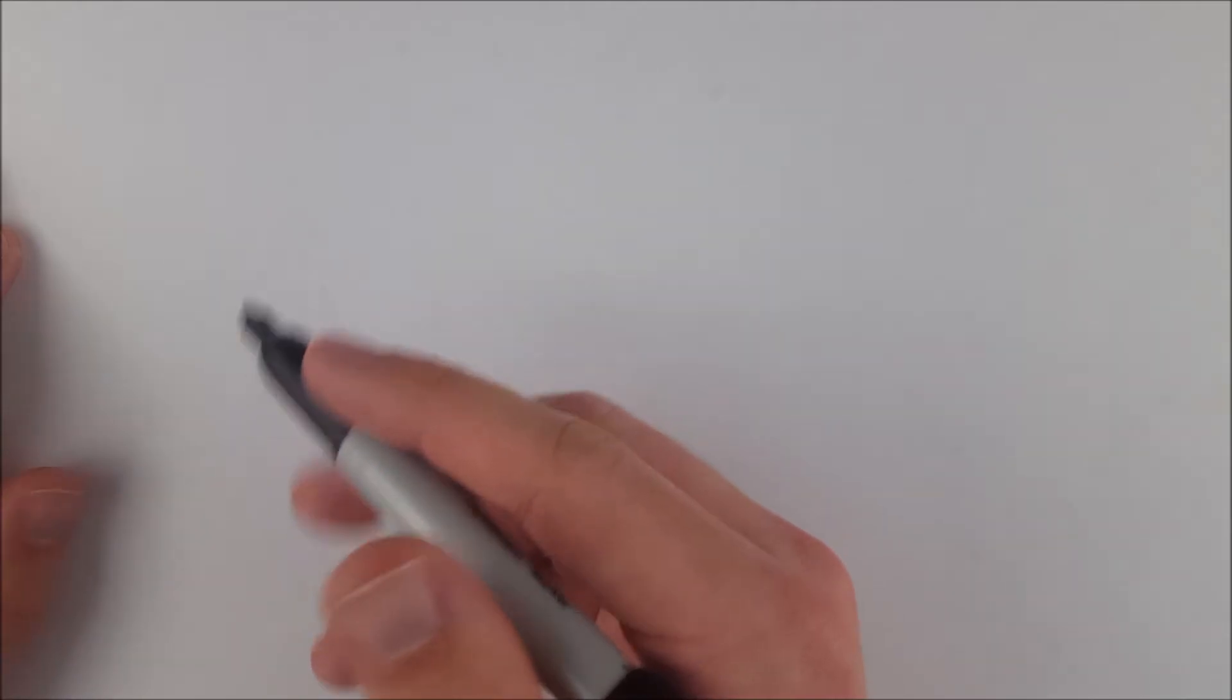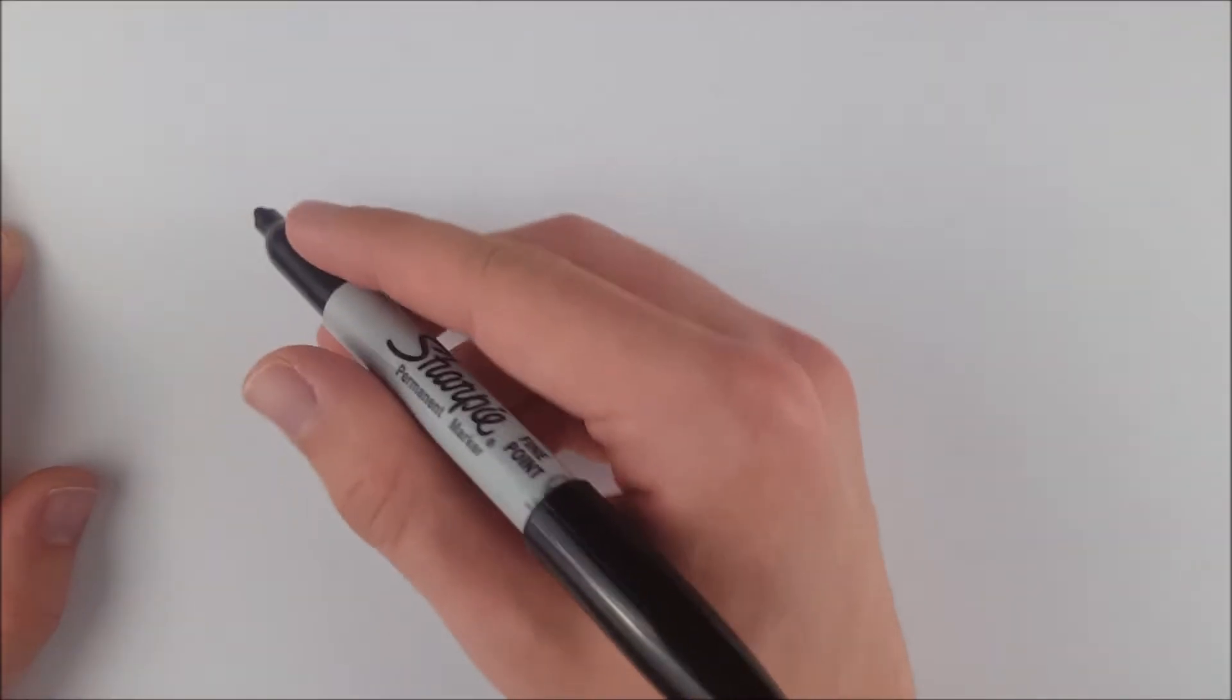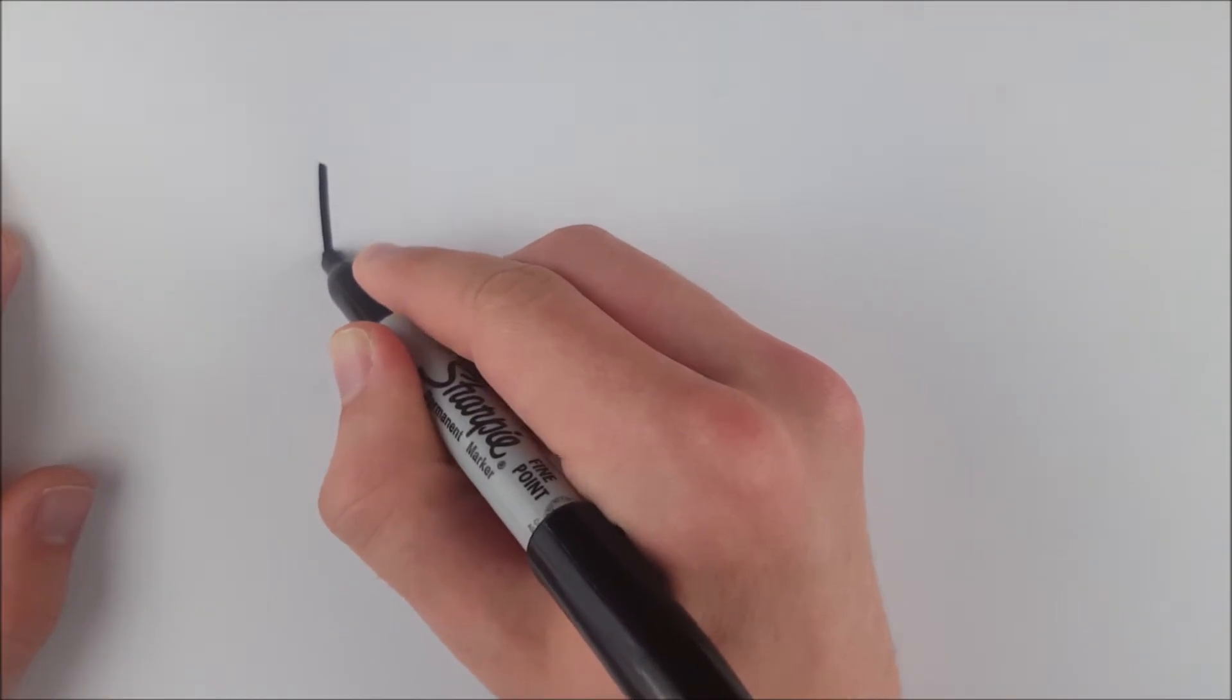In today's video, we are proving that the diagonals of a rectangle have to be congruent, which is a nice, fun result.